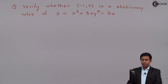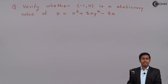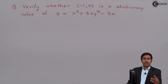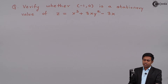At a stationary point we get minima or maxima. At a stationary point we know that fx, that is ∂f/∂x, and ∂f/∂y is 0. So here to check whether (-1, 0) is a stationary point or not, I will check whether ∂f/∂x is 0 and ∂f/∂y is also 0, and then we will check whether at this point we are getting minima or maxima. If we are, then we will say yes, this is the stationary point of the function z.